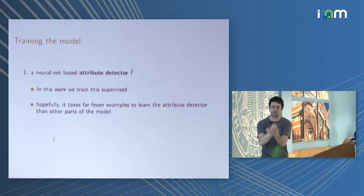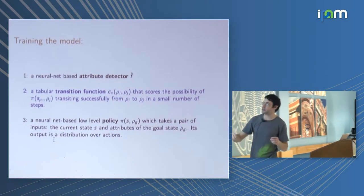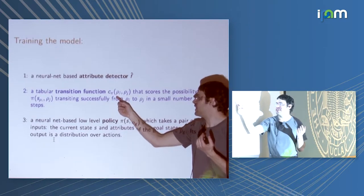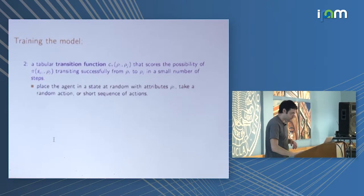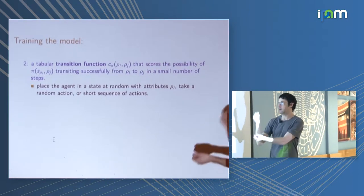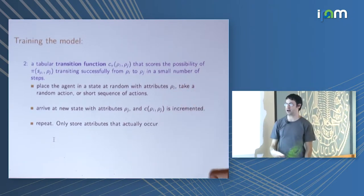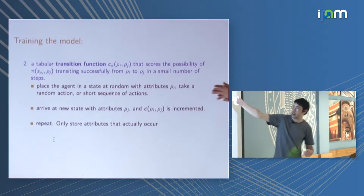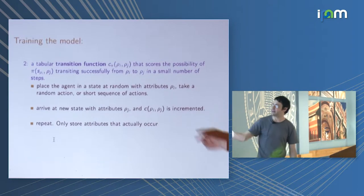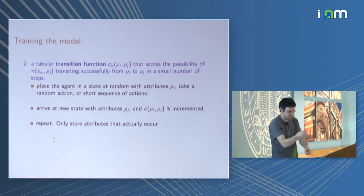The neural net-based attribute detector is straightforward: input a state, output a set of attributes, trained supervised. The next part is the transition function — a graph where row i is one set of attributes, row j is another, and the entry says how probable it is to transition between them. One way to train this: randomly place the agent in some state, figure out its attributes, take some random action or short sequence, arrive at a new state, and update a count. You tally which attribute sets actually exist, and count transitions. This is super important: in the blocks example, even with 48 attributes giving 2^48 possible combinations, only about 200,000 actually occur, because things like 'red block on top of green block' and 'green block on top of red block' can't both be true simultaneously.